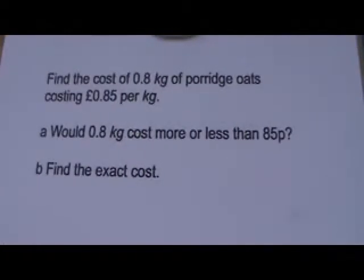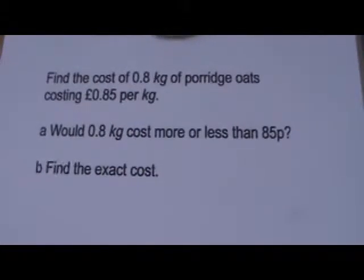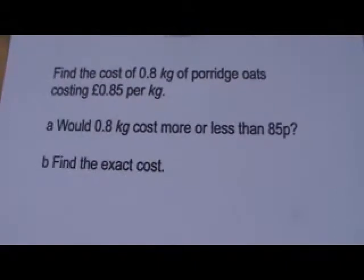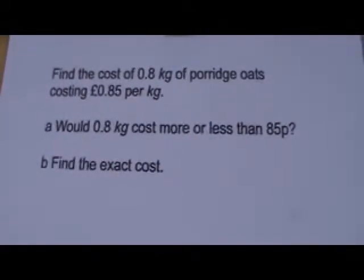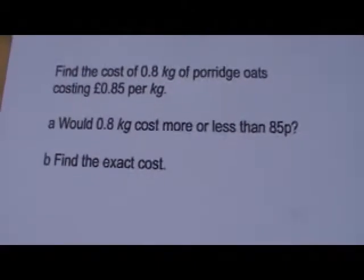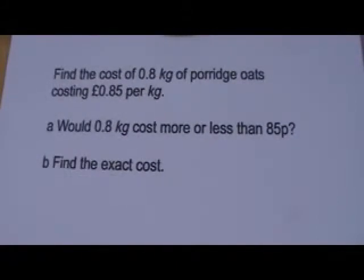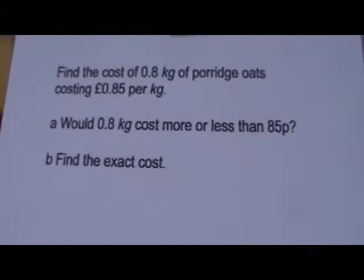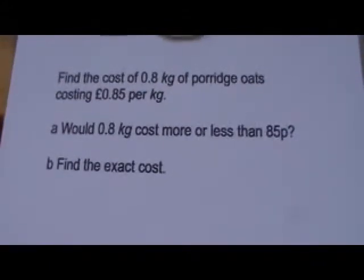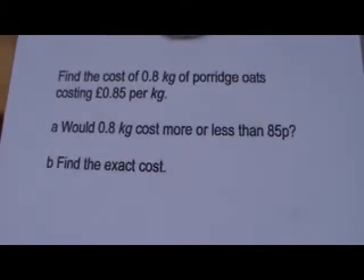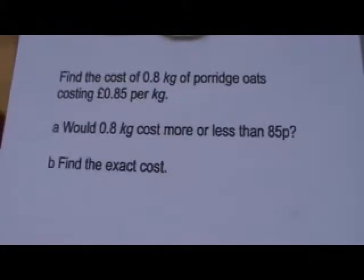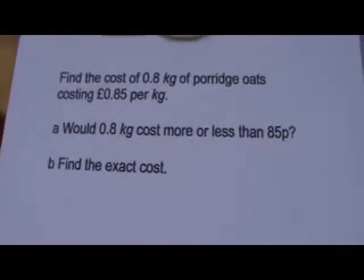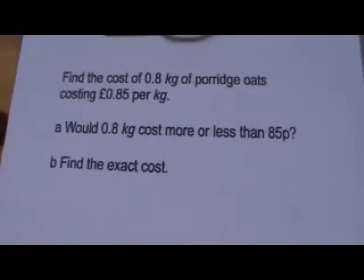Find the cost of 0.8 kilograms of porridge oats costing £0.85 per kilogram. Would 0.8 kilograms cost more or less than 85p? And then find the exact cost. So let's think about this question A first. To find the cost of 0.8 kilograms, we'd have to multiply 0.8 by 85p.